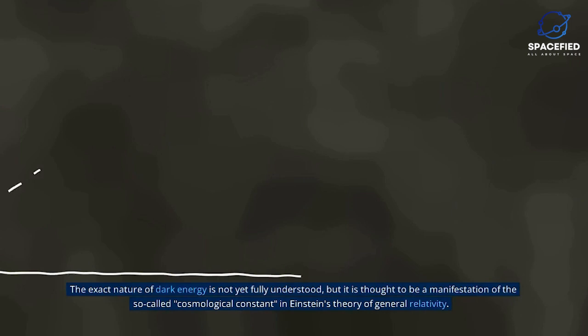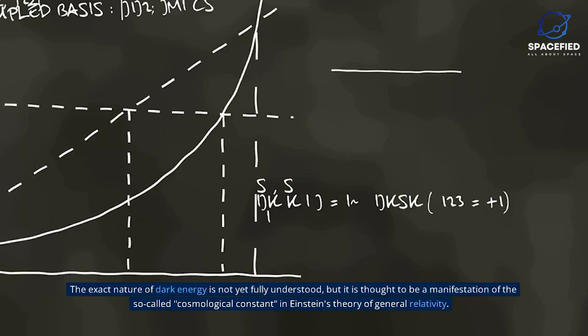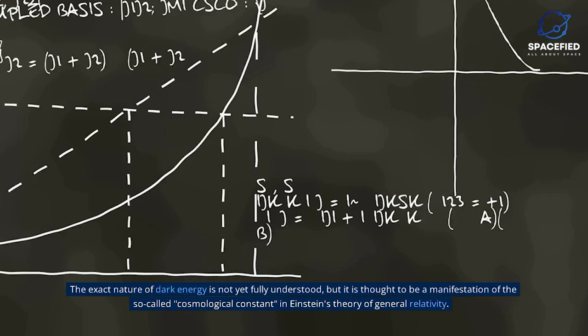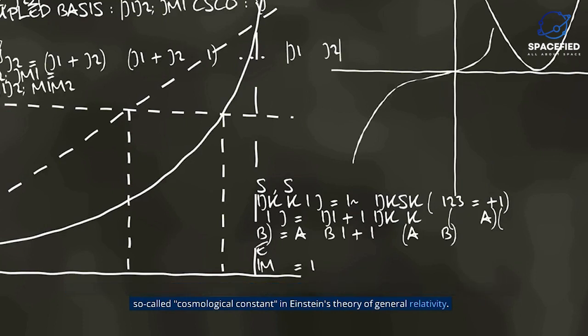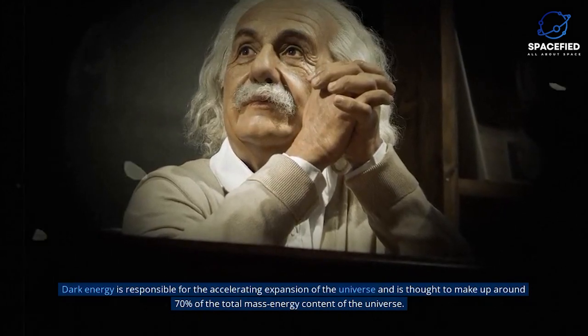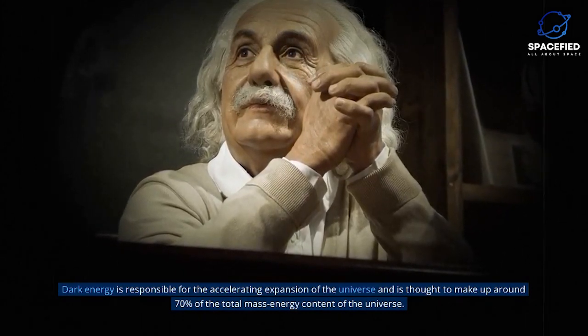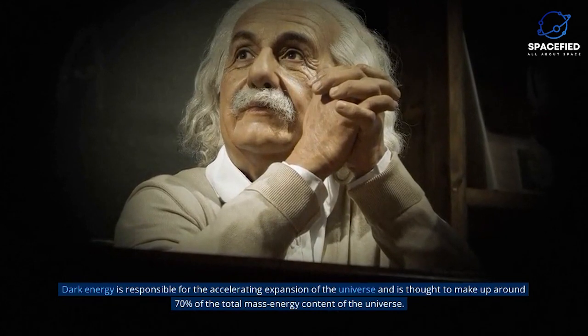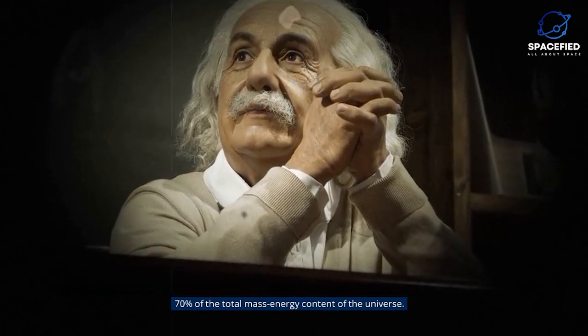The exact nature of dark energy is not yet fully understood, but it is thought to be a manifestation of the so-called cosmological constant in Einstein's theory of general relativity. Dark energy is responsible for the accelerating expansion of the universe and is thought to make up around 70% of the total mass energy content of the universe.